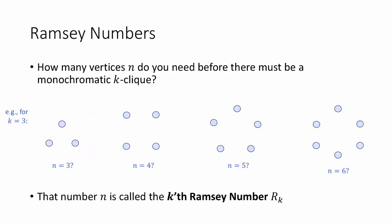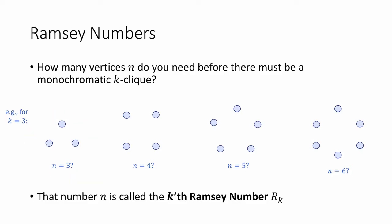Now that we've seen all these definitions, we can define Ramsey numbers. We'll ask the question: how many vertices n do you need before there must be a monochromatic k-clique? For example, for k equals three, must there be a monochromatic triangle on n equals three vertices? The answer is, of course, no. Here's a coloring which has no monochromatic triangle. How about for four vertices? Also no. Here's one — no monochromatic triangle there.